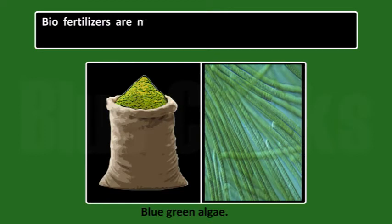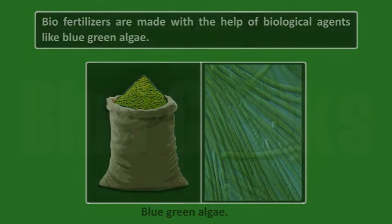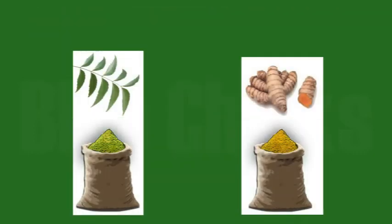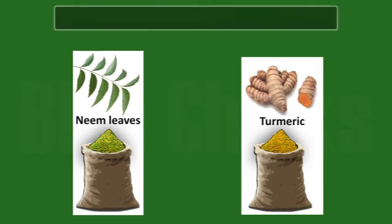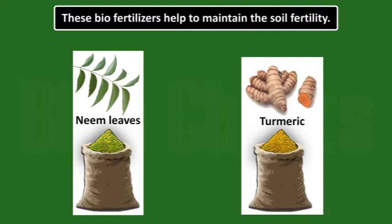Bio-fertilizers are made with the help of biological agents like blue-green algae. Even for grain storage, neem leaves or turmeric are used as pesticides. These bio-fertilizers help to maintain soil fertility.